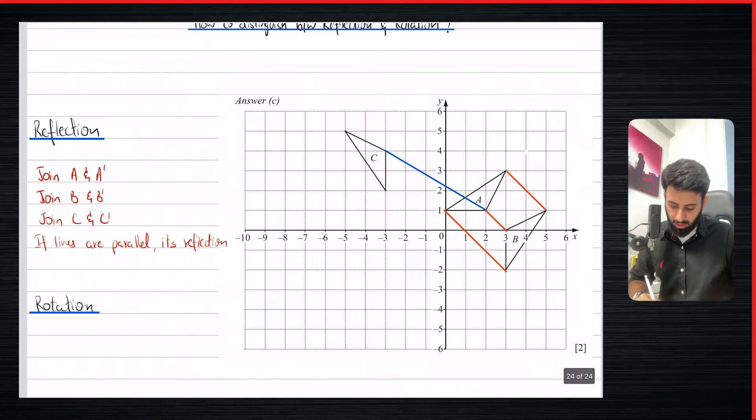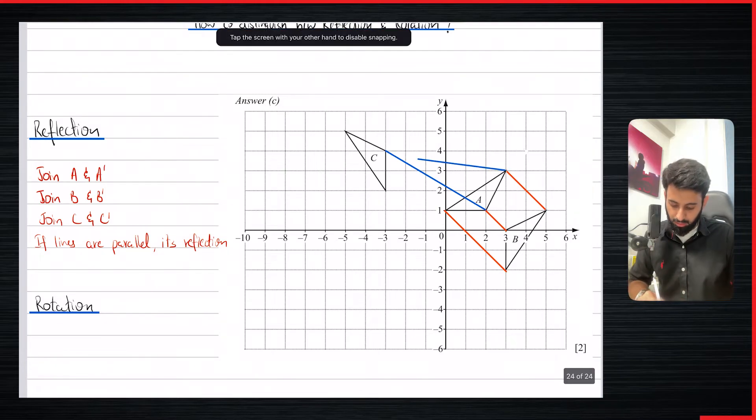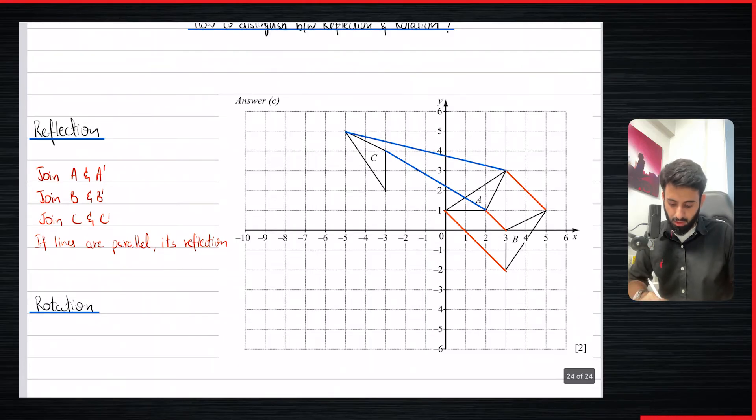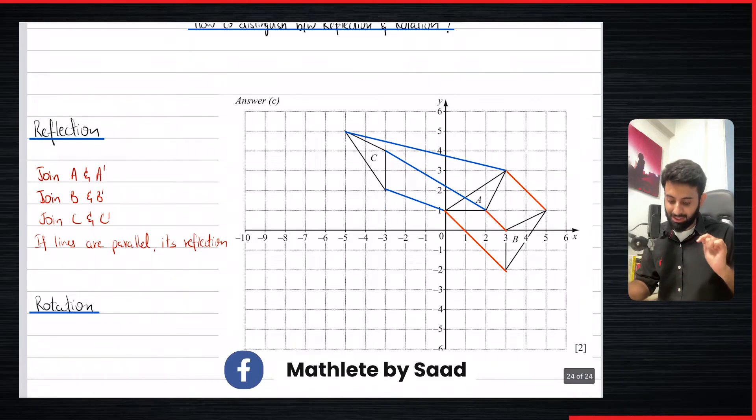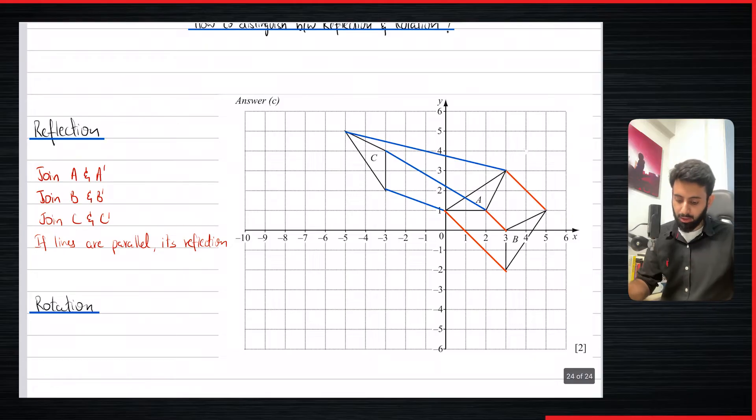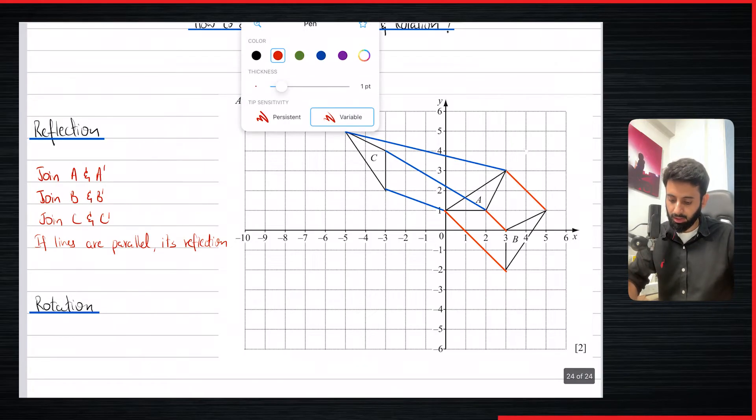So in the case of rotation, if I join, obviously this point is the image, and the image of this has to be this one. And the image of this point has to be this one. Now what happens over here is that the lines are not parallel. They're clearly not parallel. It's not like you're going to have to use a protractor to see whether they are or they aren't. They're clearly not parallel.